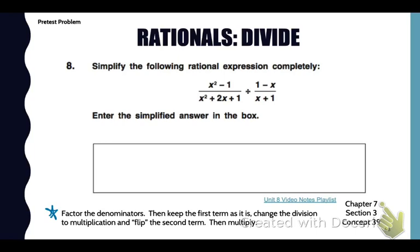When dividing rationals, first factor the denominators if you can. Then keep the first term as it is, change the division to multiplication, and flip the second term. Because when you divide by a rational or a fraction, it's like multiplying by the reciprocal.